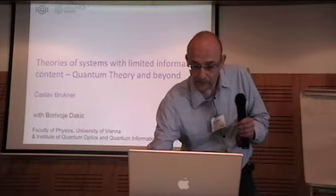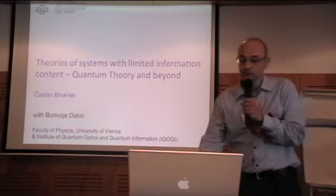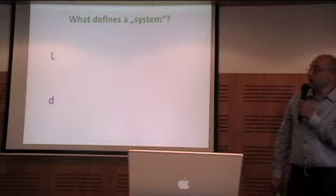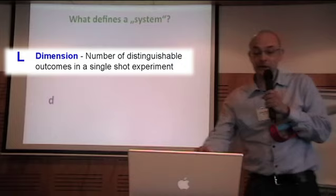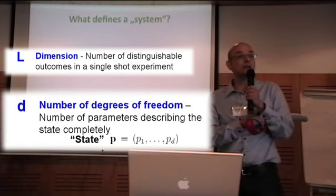This work has been done with a PhD student, my colleague Dakić. What defines a system? When you think about the abstract theory, there are two important numbers, integers usually. It's a dimension of the system, which is the maximum number of distinguishable outcomes in a single-shot experiment. And also a number of degrees of freedom, which is the minimum number of parameters you need to describe the system completely.